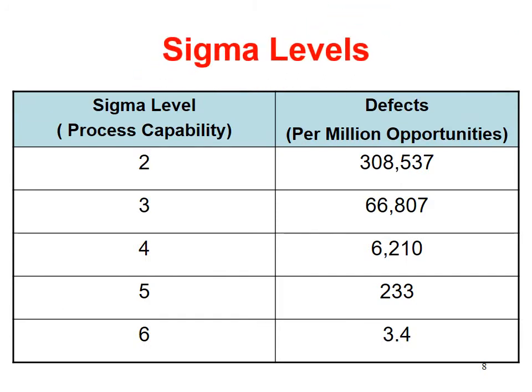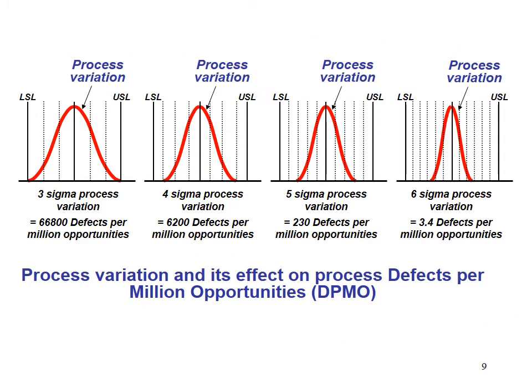Sigma levels and defects per million opportunities: At two Sigma, there are 308,537 defects per million opportunities. At three Sigma, there are 66,807. At four Sigma, there are 6,210 defects per million opportunities. At five Sigma, there are 233 defects per million opportunities. At six Sigma, there are 3.4 defects per million opportunities. This shape represents the process variation and its effect on DPMO.